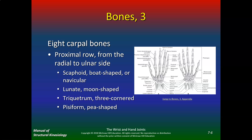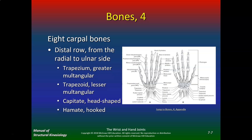The eight carpal bones form two rows. The proximal row from radius to ulna uses the mnemonic 'Some Lovers Try Positions': Scaphoid, Lunate, Triquetrum, Pisiform. The scaphoid is the most commonly fractured carpal bone — a good quiz question. You fall on an outstretched hand (FOOSH injury) and if you don't wear wrist guards, that can happen.